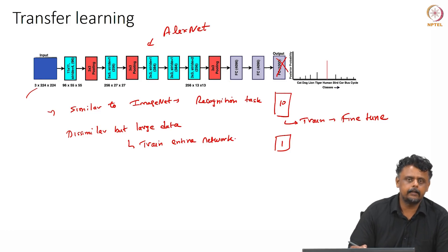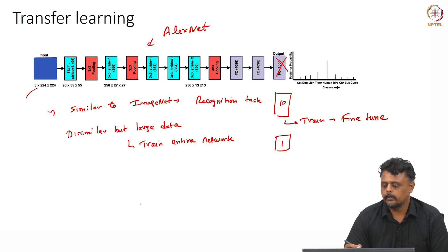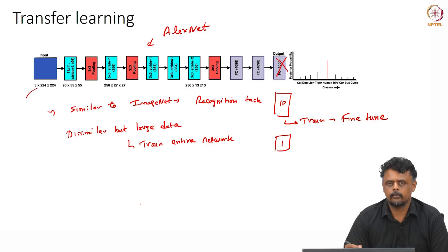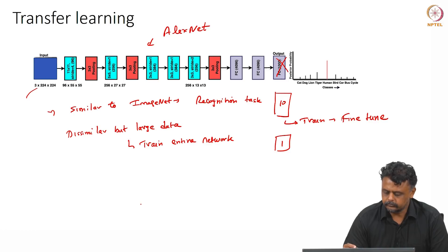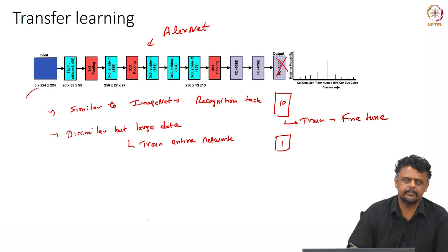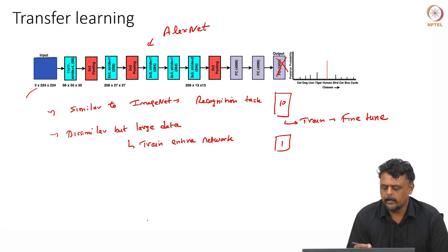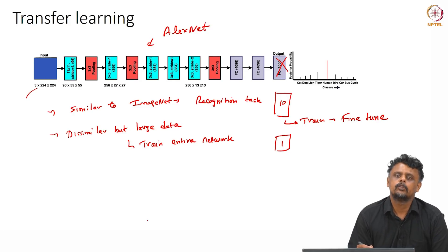This assumes you have radically different but sufficient data. AlexNet has around 60 million parameters, so to train them you need a large dataset — you also do data augmentation to increase the size of your dataset artificially. For dissimilar data such as chest X-rays or medical imaging or spectral data, you would have to train the network from scratch, but you can use the pre-trained weights as a good initialization.